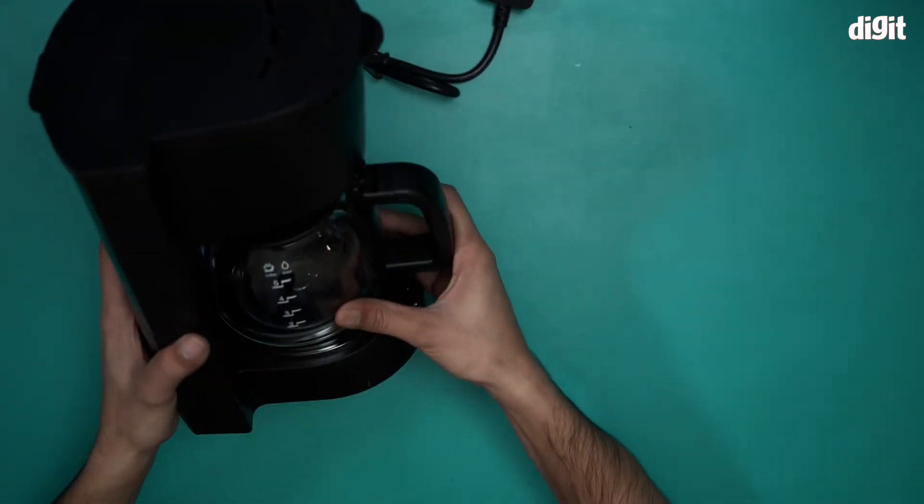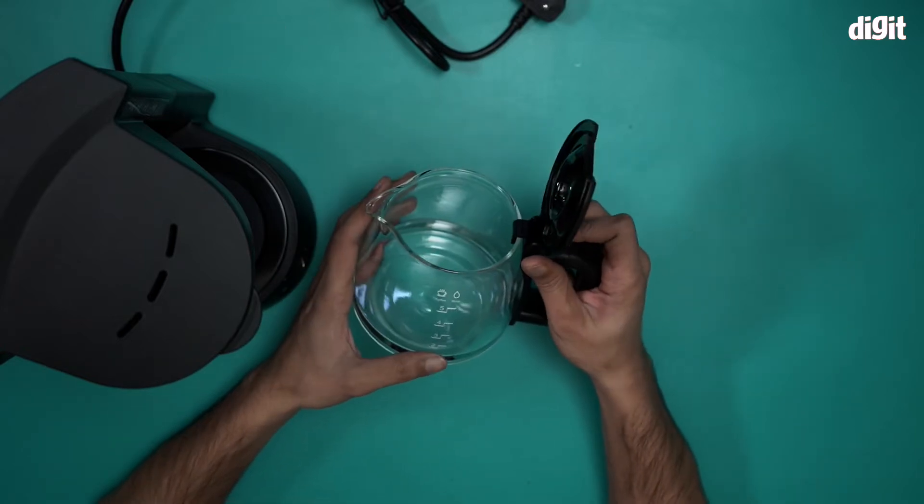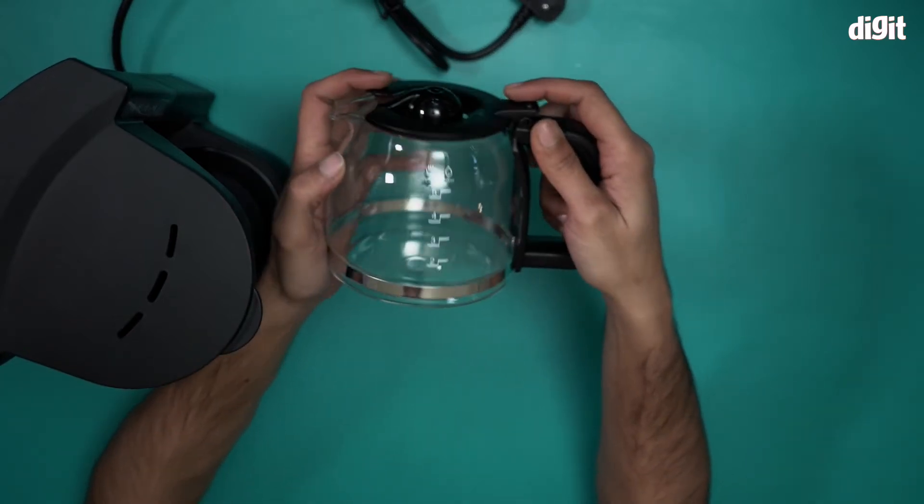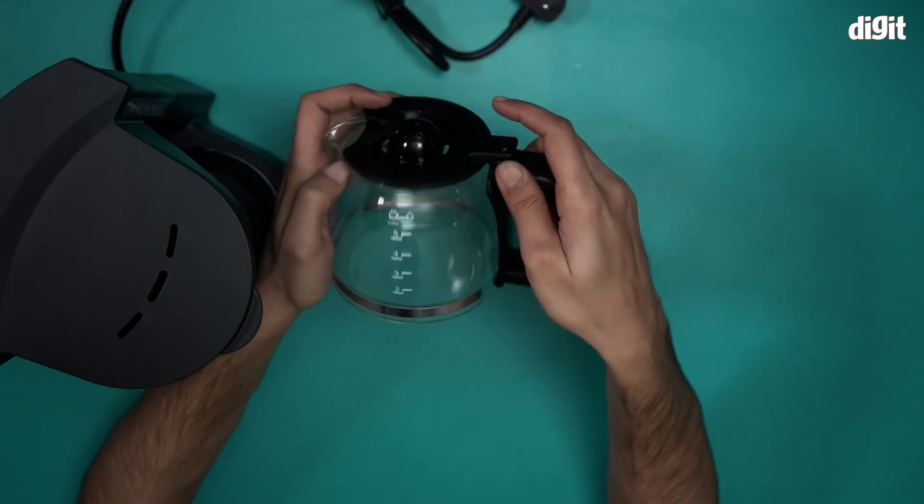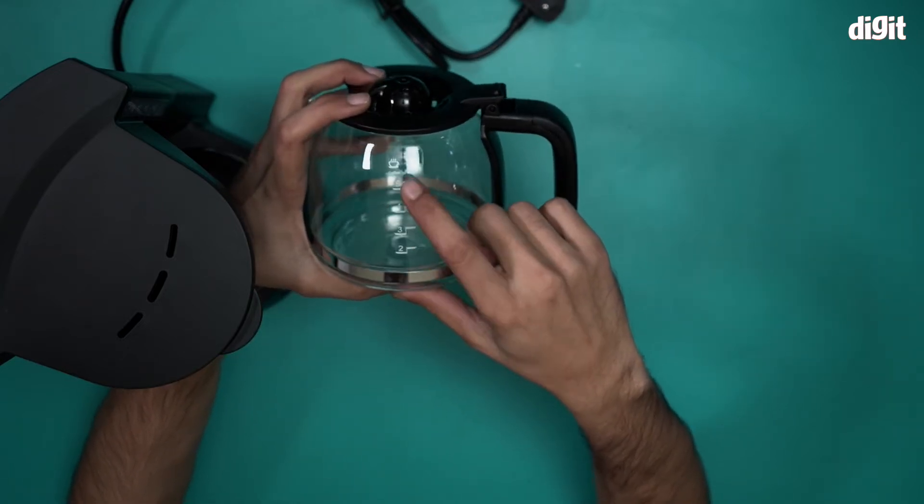So this is what the drip coffee maker looks like. First of all, it comes with this borosilicate carafe. This borosilicate carafe has a capacity of 0.75 liters, which basically means you'll be able to make around five cups of coffee.